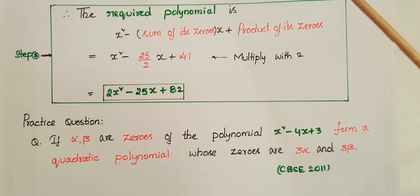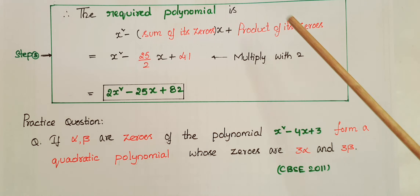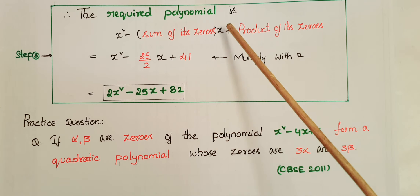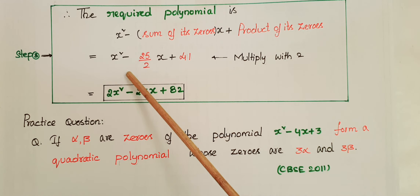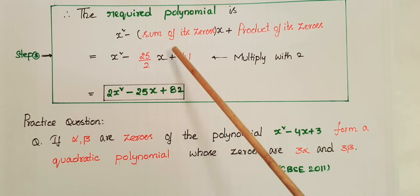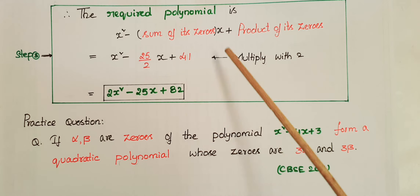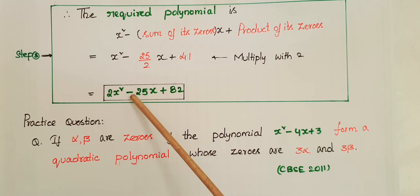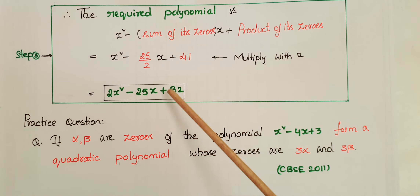Once we know the sum and product of the zeros, the required polynomial is x² - (sum of zeros)x + (product of zeros) = x² - (25/2)x + 41. Multiplying through by 2 gives: 2x² - 25x + 82.